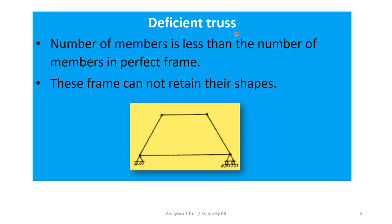A deficient truss, as the name indicates, has fewer members than a perfect frame. These frames cannot retain their shape and normally deform under load. In the example: there are four members and four joints, so 2×4−3 = 5 on the right side, but left side is 4. Since the left side term is less than the right side term, this is a deficient truss.